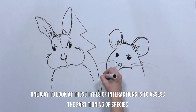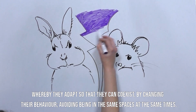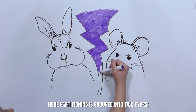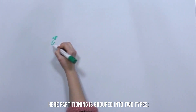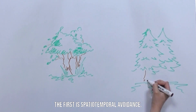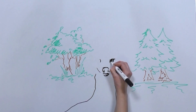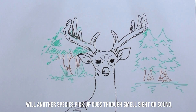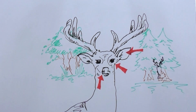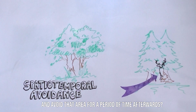One way to look at these types of interactions is to assess the partitioning of species, whereby they adapt so that they can coexist by changing their behavior, avoiding being in the same spaces at the same times. Here partitioning is grouped into two types. The first is spatio-temporal avoidance: if one species visits an area, will another species pick up cues through smell, sight or sound and avoid that area for a period of time afterwards.